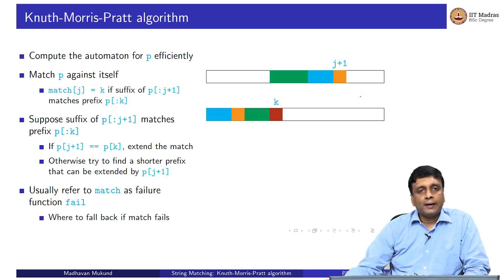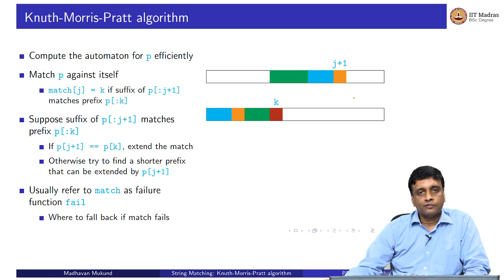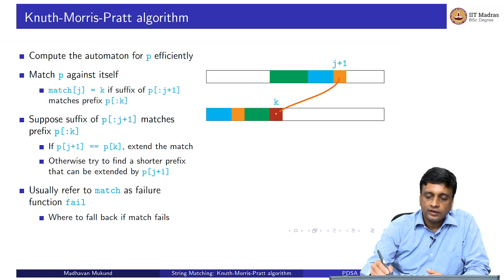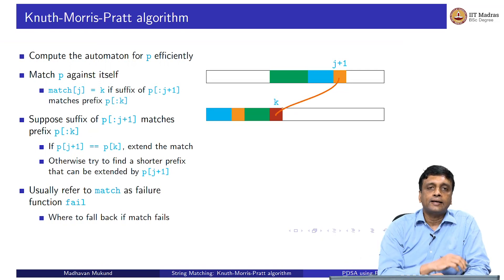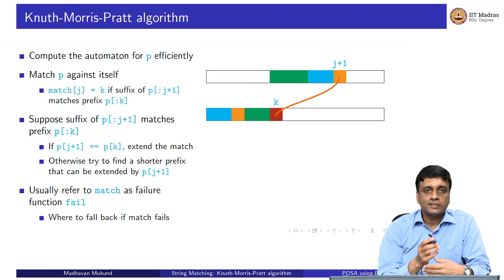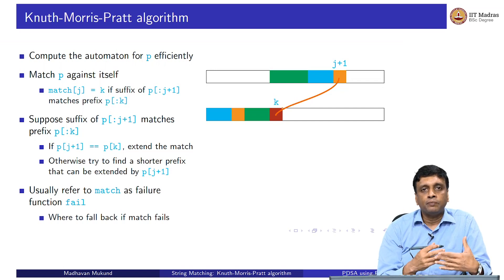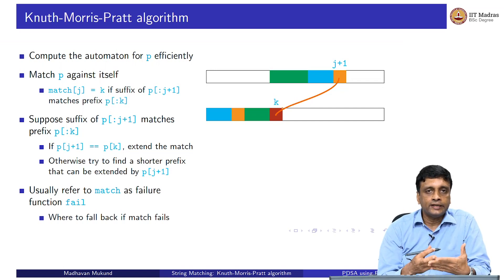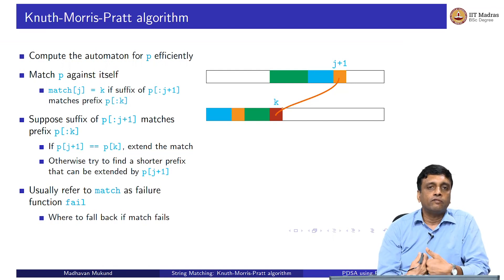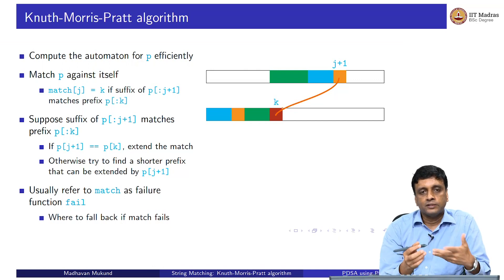Although we have called it match, in the literature this is usually called the failure function. The failure function has a natural interpretation: if I fail to match here, where should I step back and try again? If the match currently fails, the current prefix I have built up does not extend anymore, so we ask what is the best prefix I can fall back to. We will use the word fail instead of match henceforth.